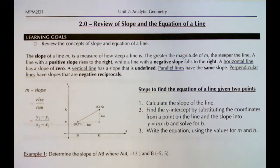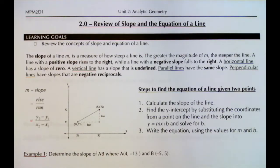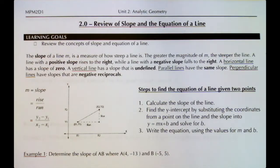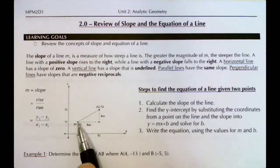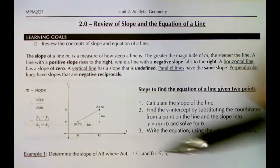This is lesson 2.0. In this lesson we're going to review how to find the slope of a line given two points and how to find the equation of a line in a bunch of different scenarios. The slope of a line is designated with the letter m in the y equals mx plus b equation, and it shows you how steep a line is. The greater the magnitude of m, the steeper the line. Lines with positive slopes rise to the right and lines with negative slopes fall to the right.